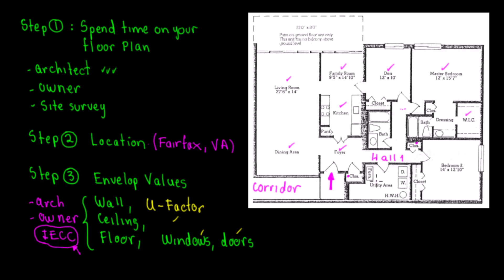Now we need to find out what is conditioned and what is exposed. The exposed walls are highlighted — this wall is exposed, this one is exposed, and this one. These other interior walls are not exposed. This distinction is critical for the heat load calculation.